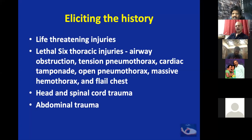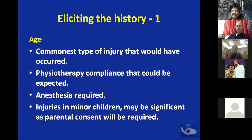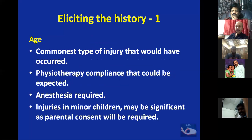Life-threatening injuries include the lethal six thoracic injuries, head and spinal cord trauma, and abdominal trauma. Coming to the history proper, the first is age. The commonest type of injury depends on age — in children you have door crush injuries and sometimes toddlers put their hand into a motor pump, which is a very common injury. In elders, it is falling down with blunt injuries and fractures.